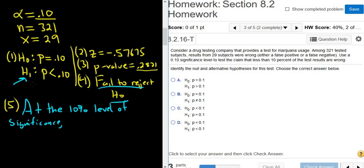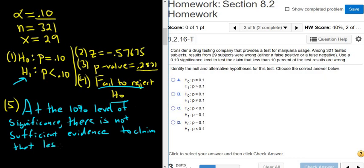So if we reject H0, there is enough evidence to support H1. And if we fail to reject, there is not sufficient evidence to claim that H1 is true. So what is H1? H1, right here, claim that less than 10% of the test results are wrong. Less than 10%, less than 10% of the test results are wrong. So that would be a full solution to the problem. Now we can go ahead and just click the correct answers.